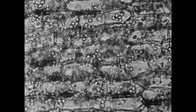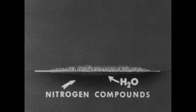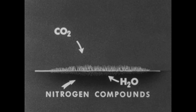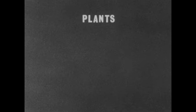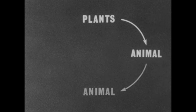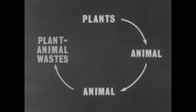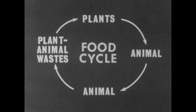Thus, food is manufactured or synthesized by plants from nitrogen compounds, minerals, and water in the soil, and carbon dioxide from the air. Both nitrogen compounds and carbon dioxide are provided by waste products of animal life. These chemicals are used by plants to make food. Some animals eat plants as food, while certain animals eat other animals as food. Plant and animal wastes are returned to the soil and air, and then reused by plants to make food. This is the concept upon which the term food cycle is based.